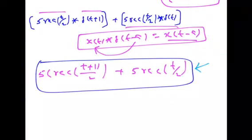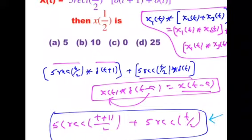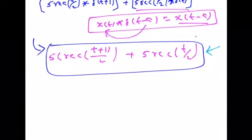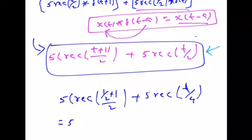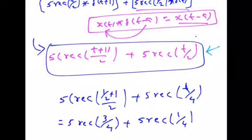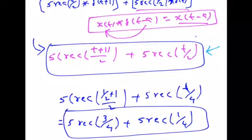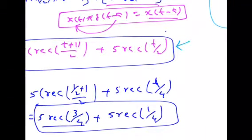Now substitute t equal to 1 by 2 in this expression. It becomes 5 into rectangle of (1/2 + 1) by 2, plus 5 into rectangle of (1/2) by 2. Simplifying: 5 into rectangle of 3 by 4, plus 5 into rectangle of 1 by 4.